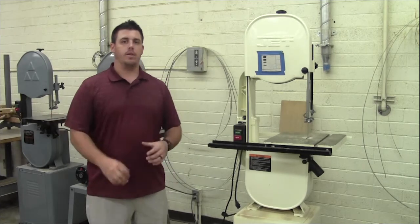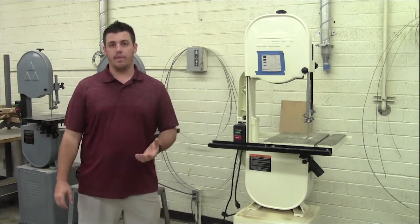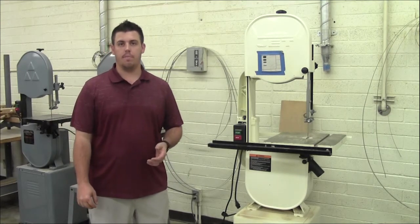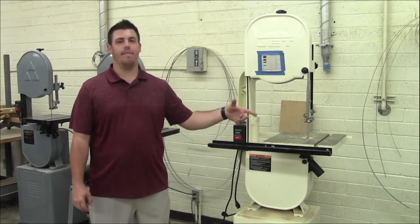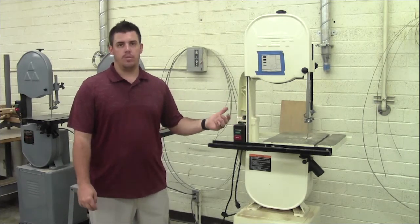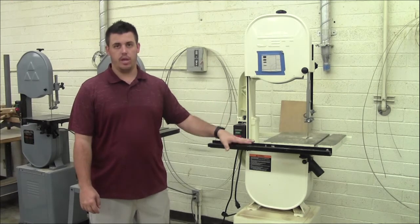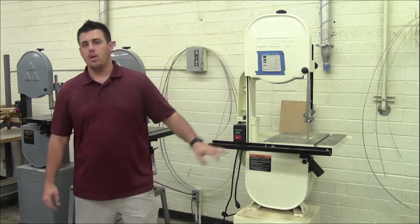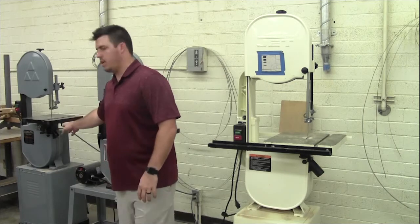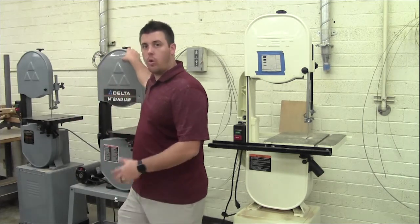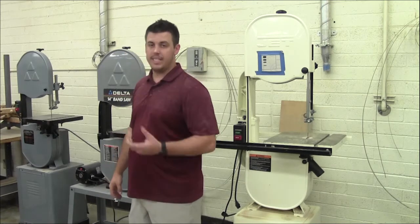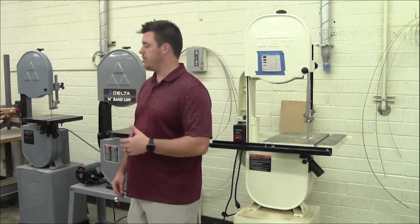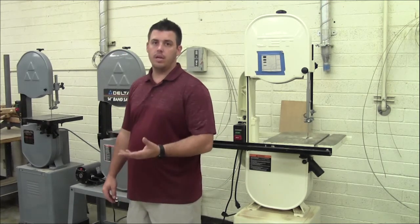The band saw is good for making a large variety of different cuts depending on what type of blade is in the band saw. In our jet right here, we have a half-inch resaw blade. That's going to be more for straight cuts and resawing. Over here on the delta side, we'll usually do quarter-inch blades. Quarter-inch blades, they're not going to be as easy to cut straight. So you're going to be cutting more curves with it.